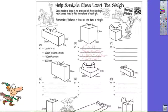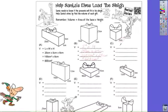The next one only has one dimension. That means that this is a cube. The length, the width, and the height are all the same dimension. Therefore we can say the volume of a cube is side cubed.